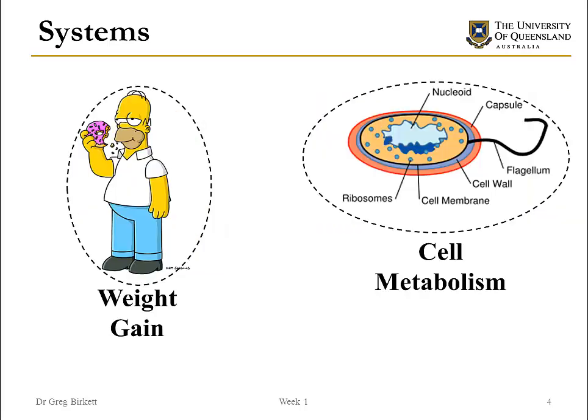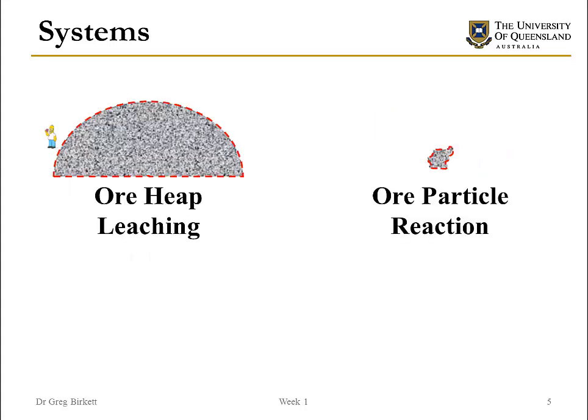We could be interested in what a person does if we're wanting to look at weight gain, for instance. But we could actually define a much more fine-grained system and have a look at how individual cells behave. In principle, you could investigate weight gain both ways, but one would take a very long time and the other would be much more practical. Similarly, we can look at an ore heap and the leeching that occurs within that heap, or go all the way down to a single ore particle. It all just depends on what you're trying to achieve with your model.